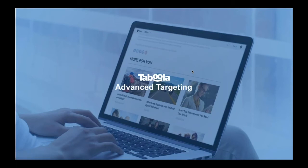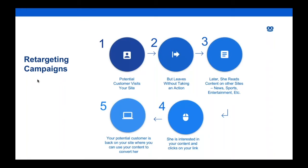We have a few advanced targeting features. Firstly, retargeting. A potential visitor may visit your site but leave without taking an action. The same person might then be on another site and see your retargeting ad in the Taboola widget — when they click, they're back on your site and you can target them with a more aggressive and direct landing page. To set this up, go to Pixel Management and choose the retargeting option. Please note there's some configuration needed on our end, so discuss this with your Taboola rep before setting it up.